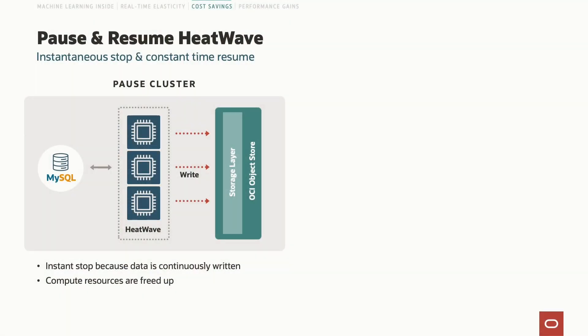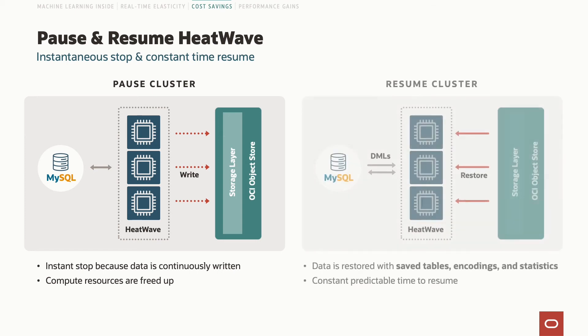In order to help customers save money, we've implemented pause and resume. You push a button, all of your data stored in HeatWave nodes is pushed out into object storage, it's saved, and then those nodes are deprovisioned — you don't need to pay for them anymore. And when it's time to run your analytic queries, you push a button and all of that data flows back in.